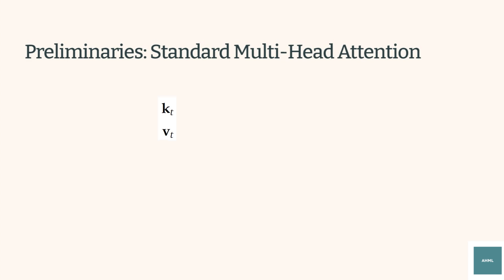K and V of all prior tokens are stored in the KV cache, so when a new token comes in, the new token attends to past K and V stored in the cache without calculating them again. However, storing KV cache for every token creates a large memory bottleneck.